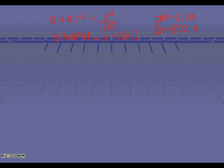Remember, x is not hydrogen on this one — x is hydroxide. So find the pOH first, which is 5.28, and then subtract from 14 to get pH equals 8.72. This is when we have the addition of 50 milliliters of sodium hydroxide, and this was at the equivalence point. Look at our pH — we said it should be in the basic range because we're adding a strong base, and it is 8.72, above 7.